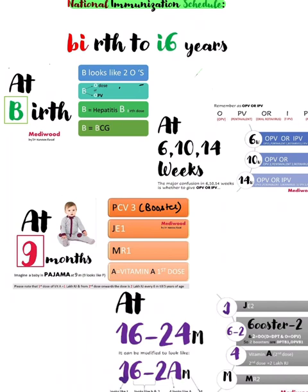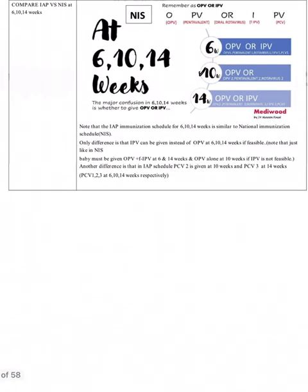For the national immunization schedule, at birth — remember B looks like the number 2, representing zero dose of OPV; B is also for the birth dose of Hepatitis B; and B is for BCG. So three vaccines are given at birth. Moving on to the 6th, 10th, and 14th week, which is the most frequently confused part of the schedule.